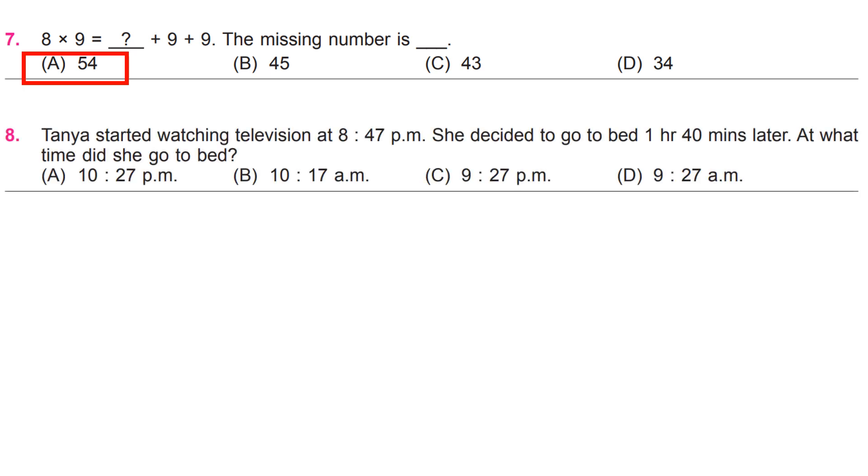Tanya started watching television at 8:47 p.m. She decided to go to bed 1 hour 40 minutes later. At what time did she go to bed? A, 10:27 p.m.